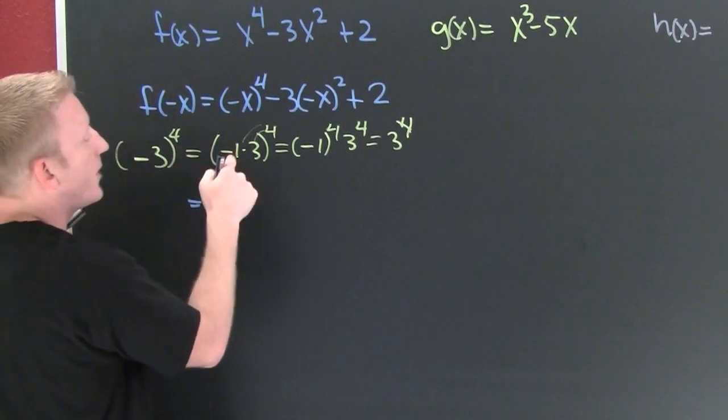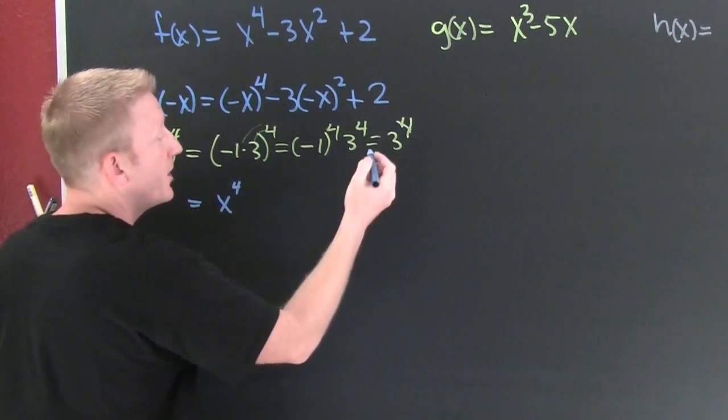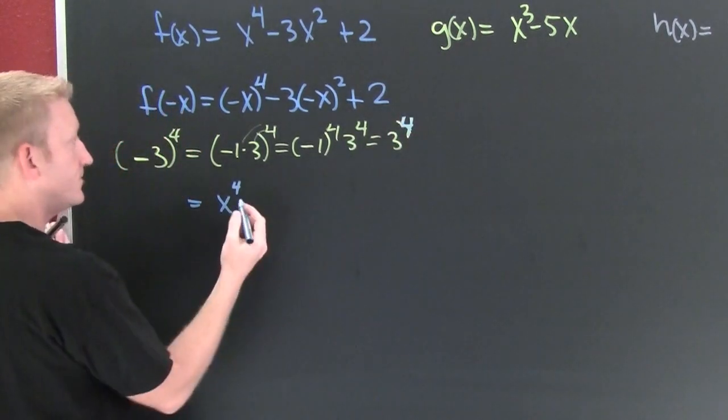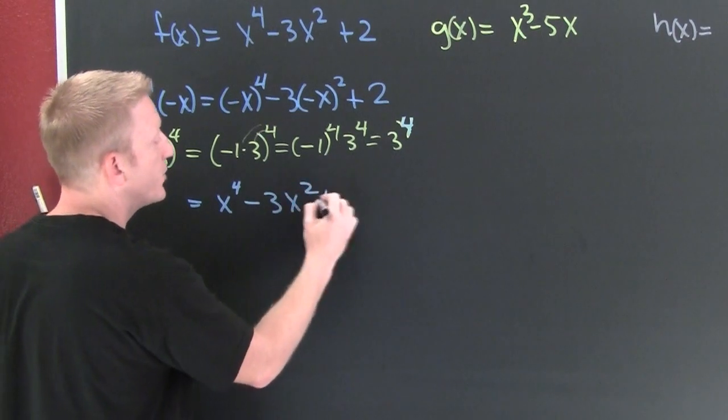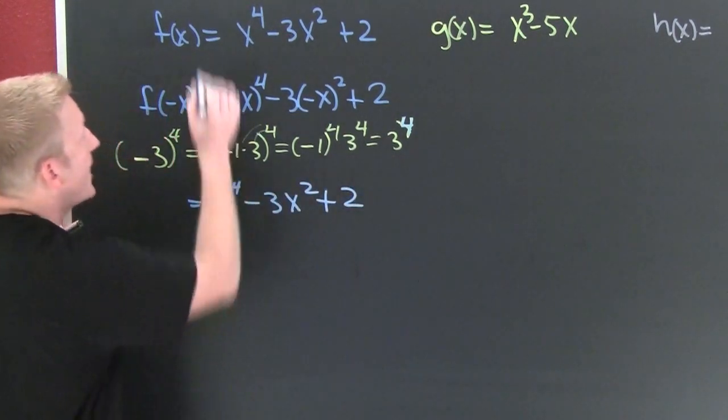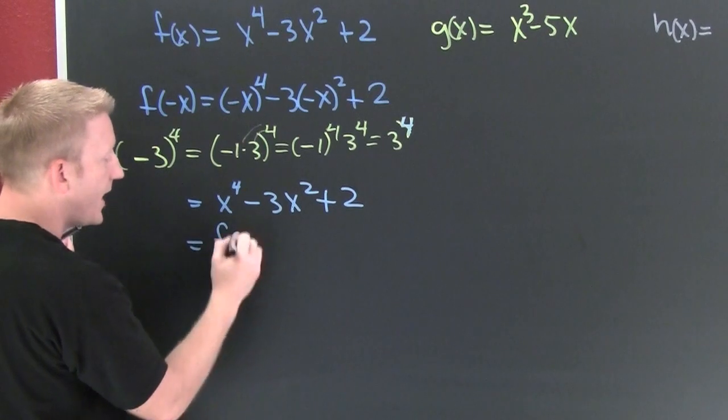Why? Because the even power is going to, for lack of a better word, kill that minus sign. It's going to make it positive. Minus three times x squared plus two. But what is that? That is f of x.